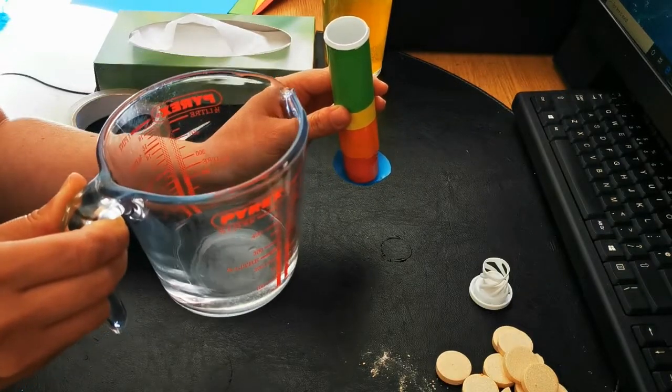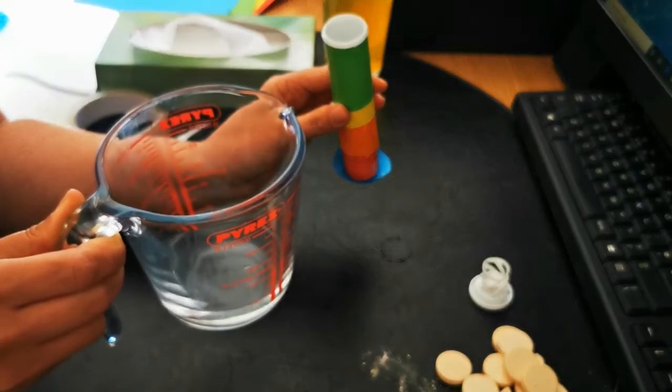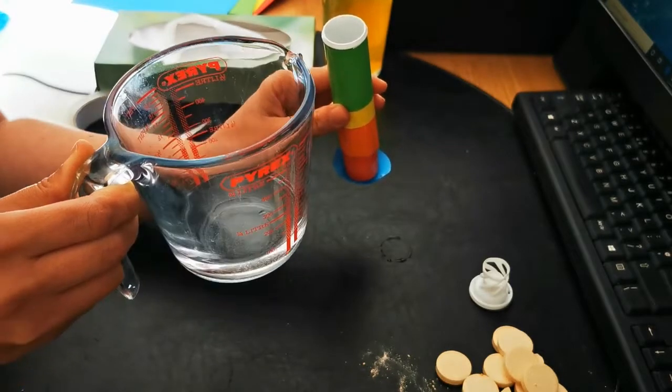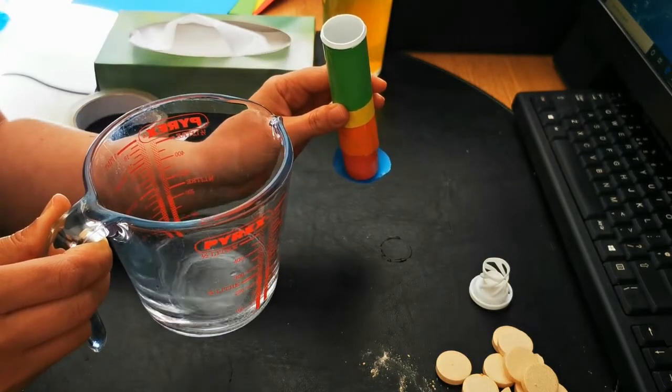The second reason it's in the measuring jug is that we can take the measuring jug of water outside with us if we decide we want to have another go at setting up this chemical reaction outside, another go at setting off our rocket.